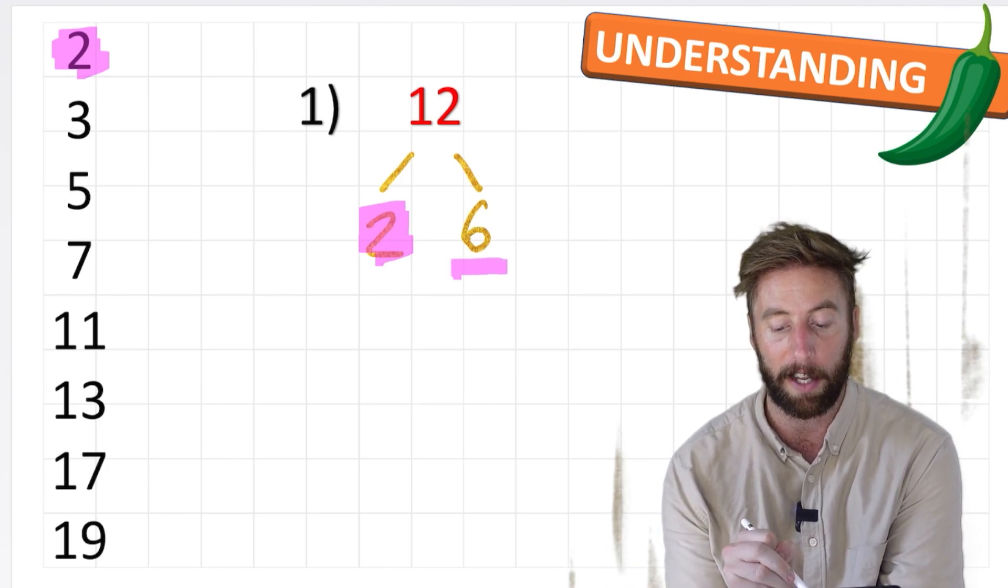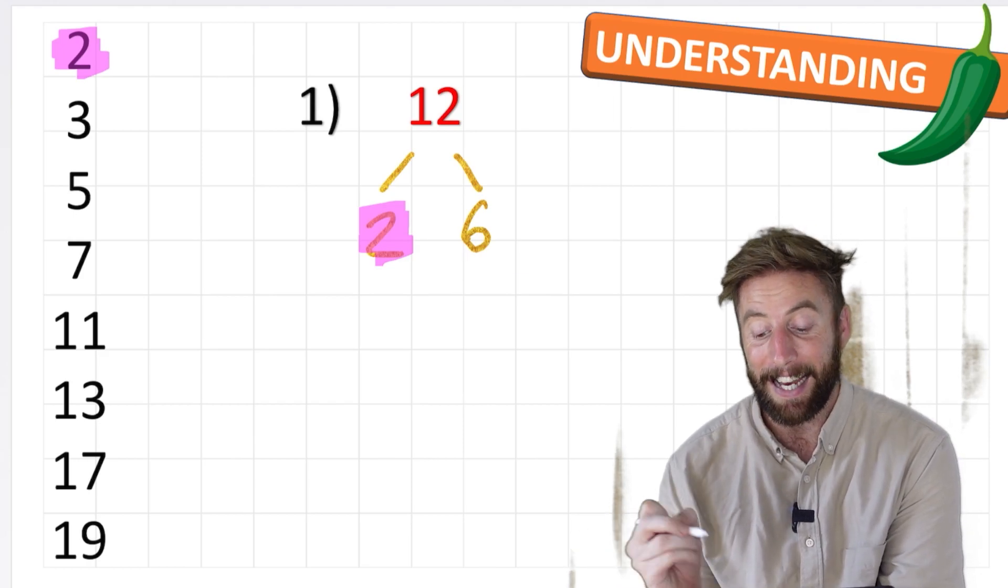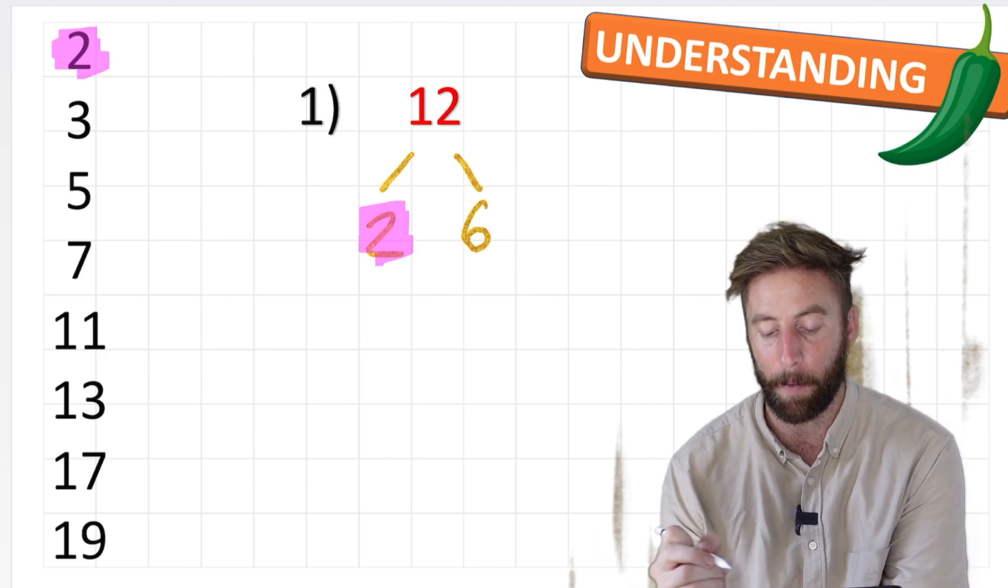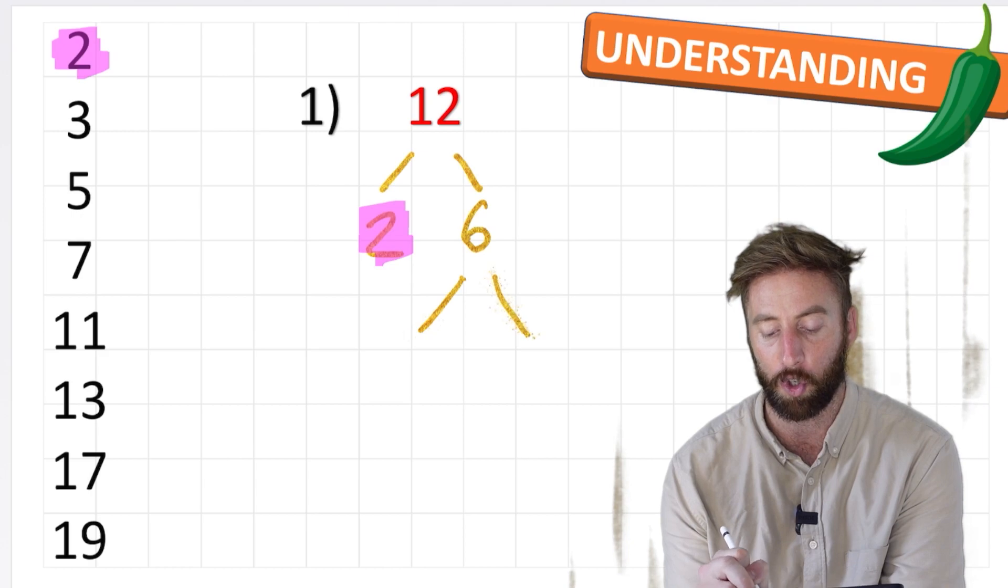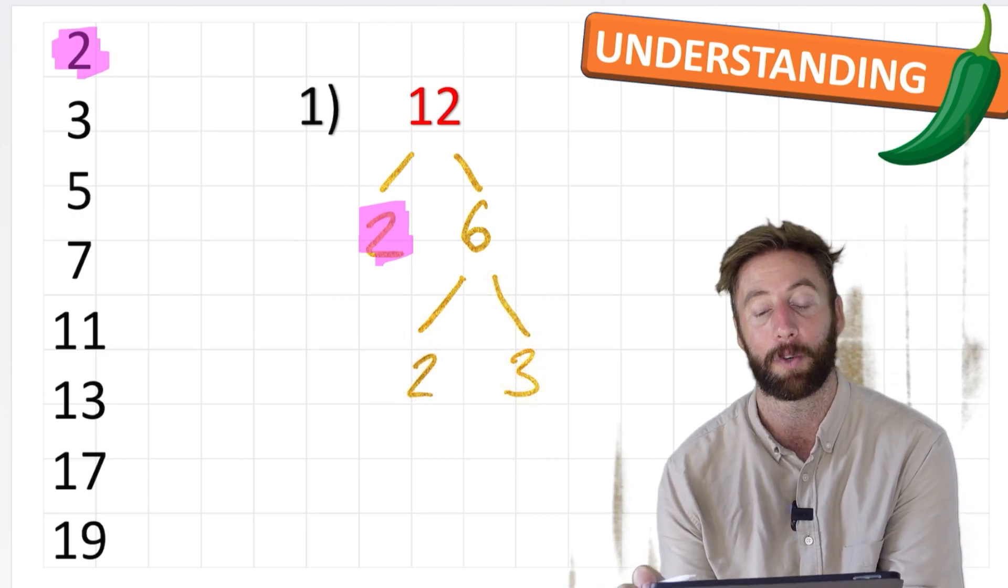No, it's not in our list, so therefore we need to carry on. And we can see that actually 6 isn't a prime number because it can be made up of 2 and 3. 2 times 3 equals 6.